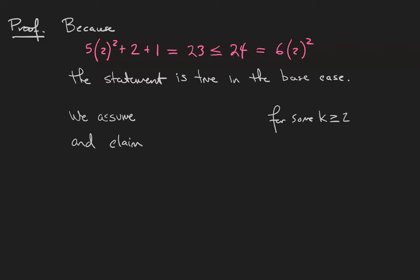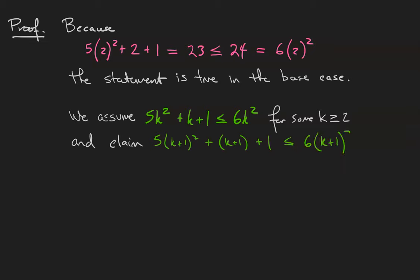We assume the statement is true for k, so we assume that 5k squared plus k plus 1 is less than or equal to 6k squared for some k greater than or equal to 2. And we would like to show that 5 times (k+1) squared plus (k+1) plus 1 is at most 6 times (k+1) squared.